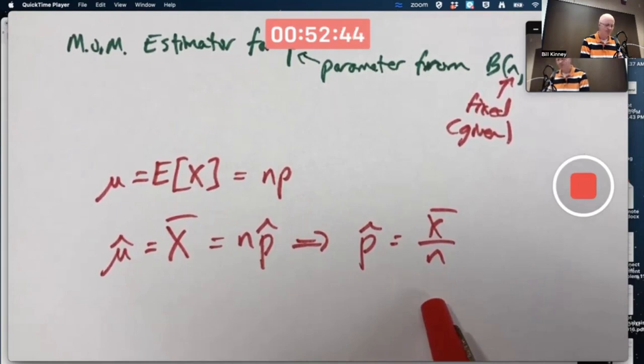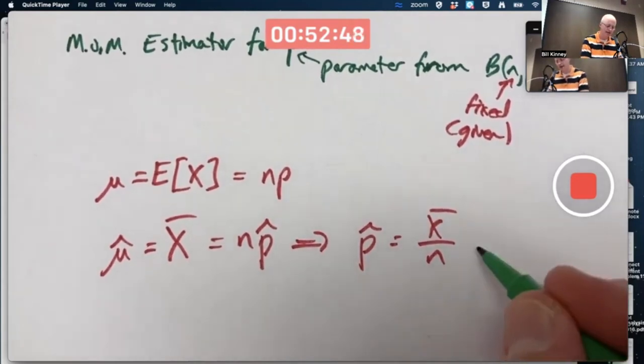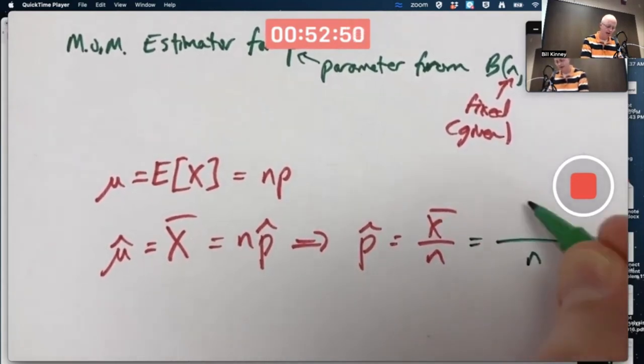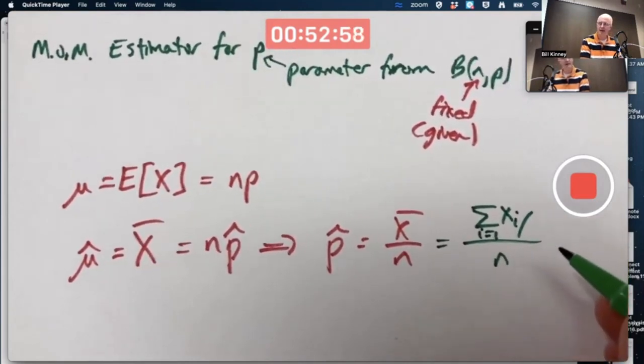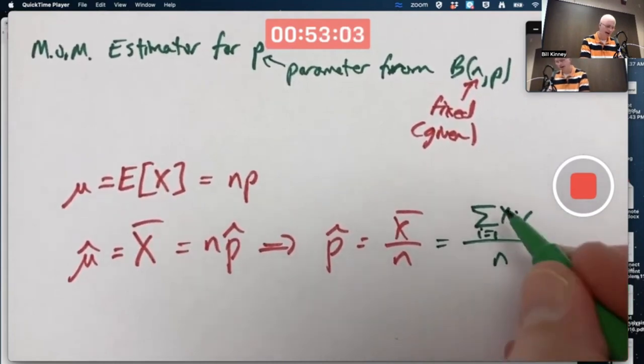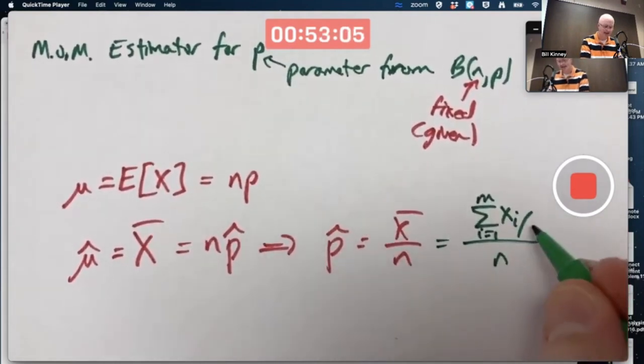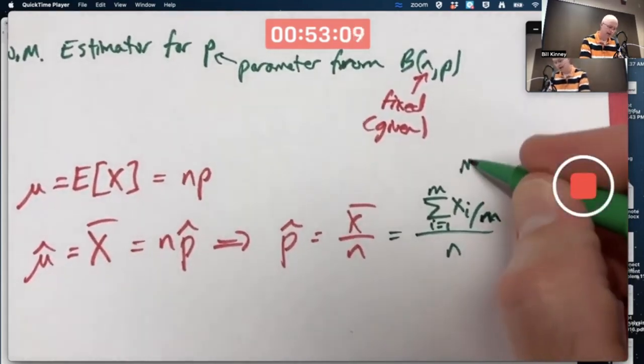But wait a minute. Does that mean if I simplify this formula, there would be two N's in it? Because x̄ is the sum of the xi's over N, right? Well, if you were thinking about this kind of problem, you'd want to use a different letter for the sample size. How about an M instead of an N?